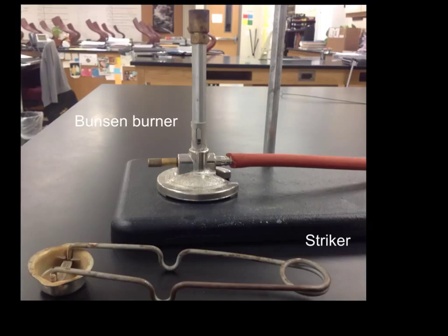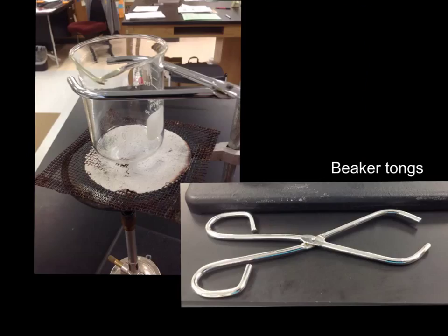You can also use it to heat a beaker over a Bunsen burner. You would want to use beaker tongs. These tongs are specifically for picking up hot beakers and moving them on and off the ring clamp that is suspended over the Bunsen burner.